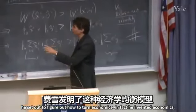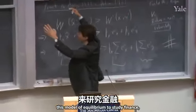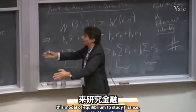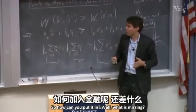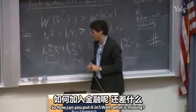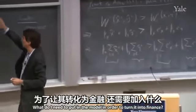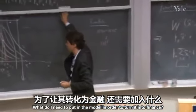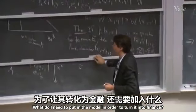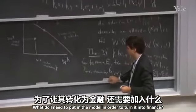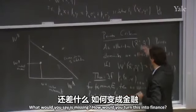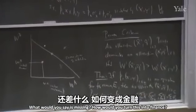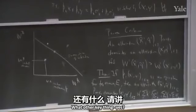Fisher invented this model of equilibrium to study finance, but so far we don't have any finance in the model. So how can you put it in? What is missing? What do you need to add to turn this into finance? The first answer: you need some element of time. So far we've just had apples and oranges being traded. As Fisher said, you need to put time in the model.